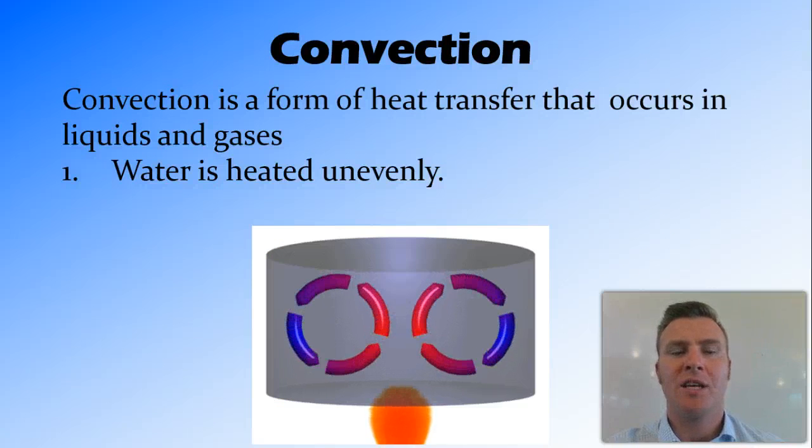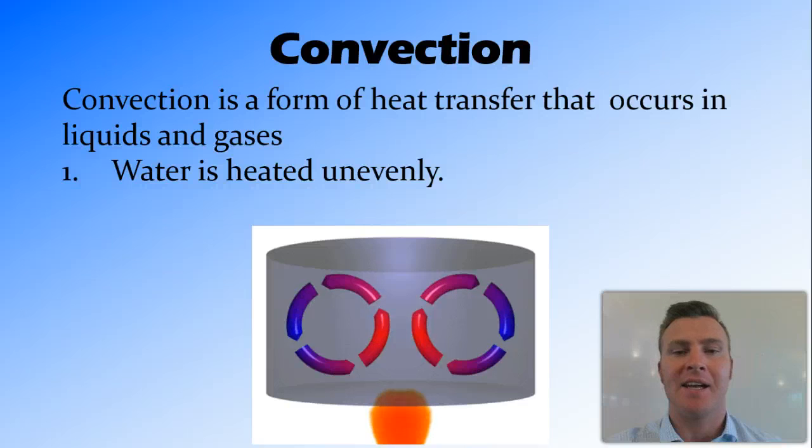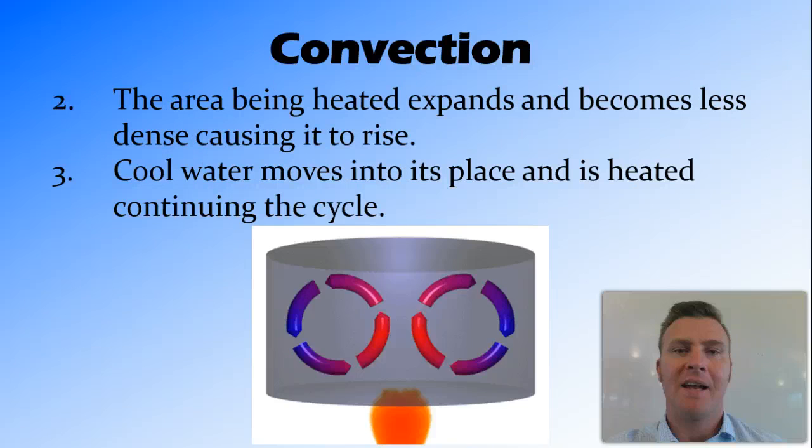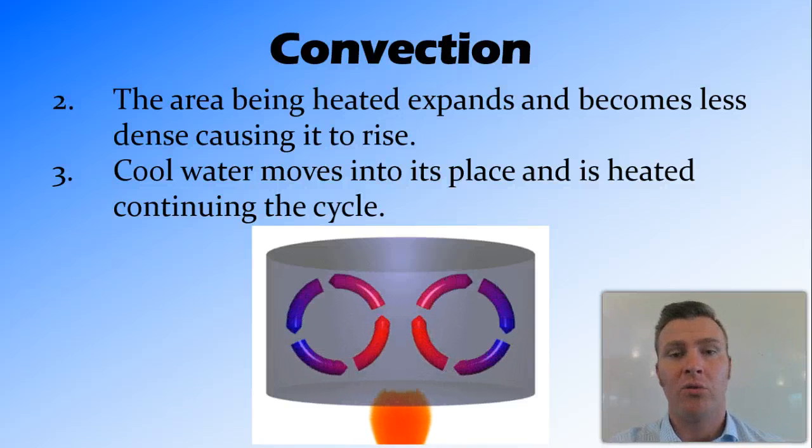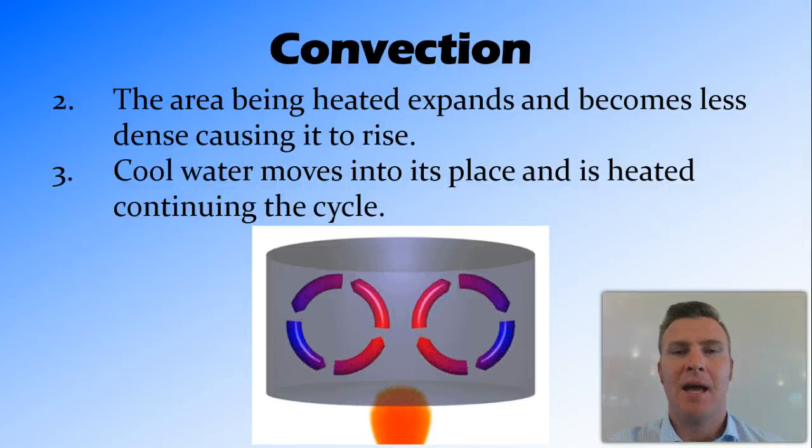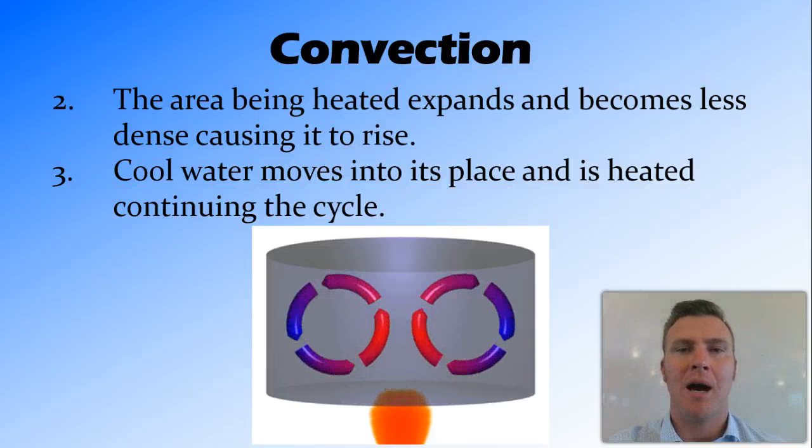Convection occurs in liquids and gases where the particles are free to move around. The heat comes in unevenly, in this case from the middle at the bottom. As that area that's being heated expands it becomes less dense causing it to rise. And then cool water or fluid moves into its place and then gets heated, and this continues this convection. So it causes convection currents of particles moving around in the medium.